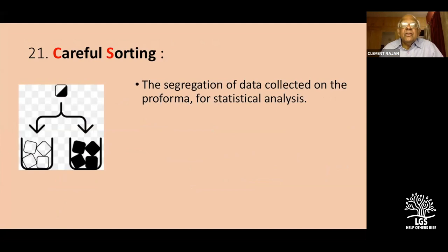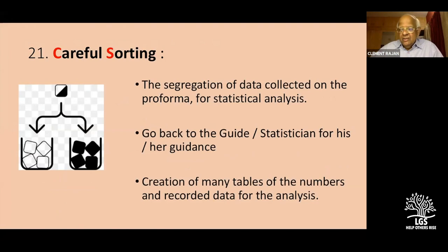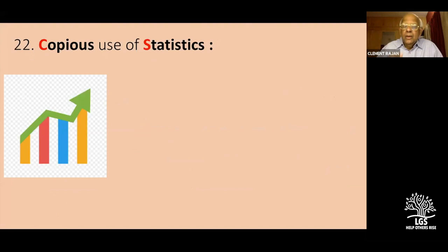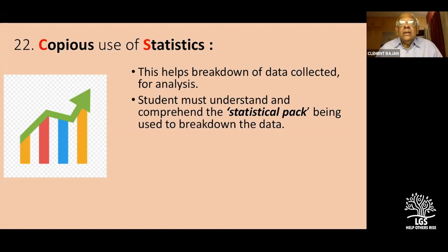Now you need to sort out the data collected from the pro forma for statistical analysis. Go back to the guide and ask what to put into which table — it's not very difficult. You need to create a few tables: age incidence, symptom incidence, findings, preoperative assessments, and various other tables for analysis. Here again statistics are very important — the statistician helps break down the data for analysis.